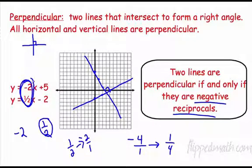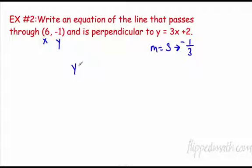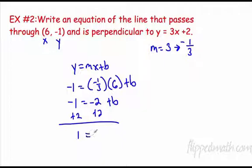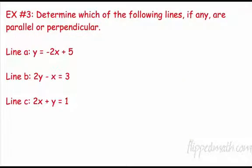So anytime you can see that situation, you know those two lines are perpendicular. Let's try one: write an equation of a line that passes through (6, -1) and is perpendicular to y equals 3x plus 2. The slope is 3 — flip it to get 1 over 3, and it was positive so now it's negative. Using y equals mx plus b: negative 1 equals negative 1 third times 6, which is negative 2. Add 2 to both sides: b equals 1. So y equals negative 1 third x plus 1.